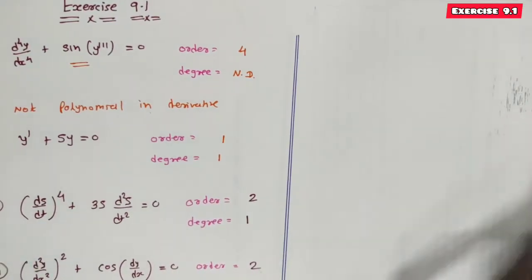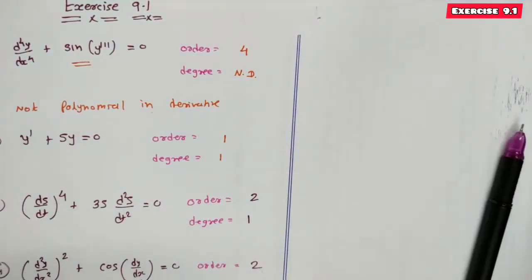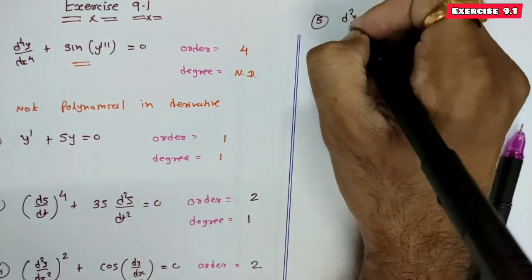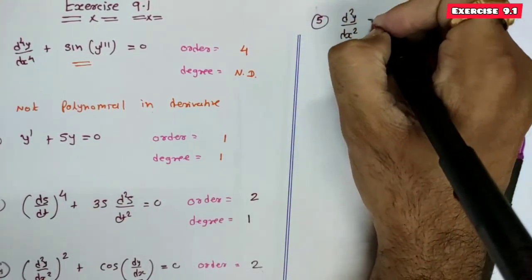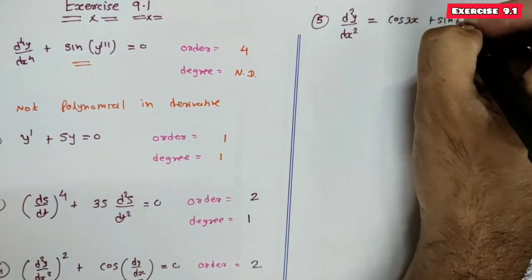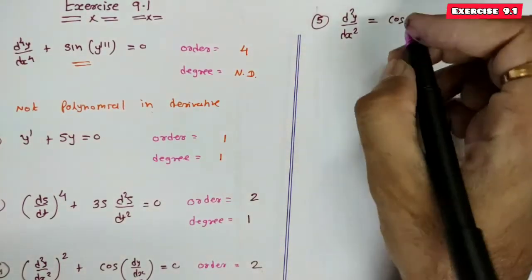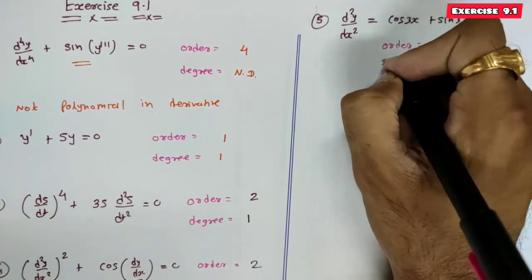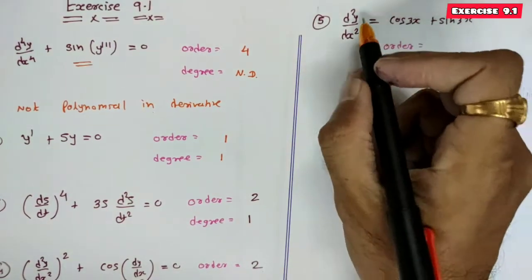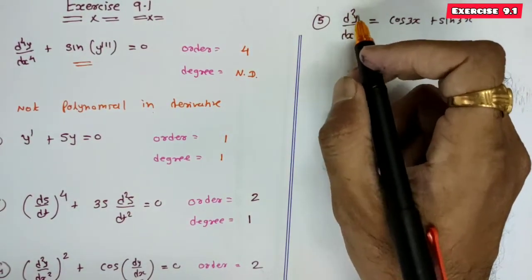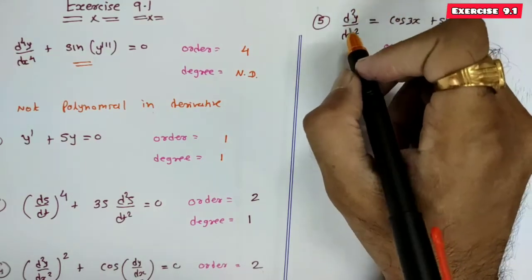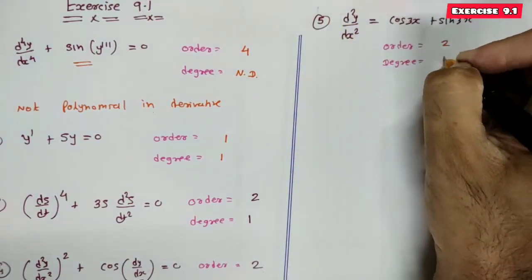Equation 5: d²y/dx² = cos 3x + sin 3x. There is only one derivative present and it is of order 2, so the order of this differential equation is 2. The equation is polynomial in derivatives, and the power of the highest order derivative is 1, so degree is 1.